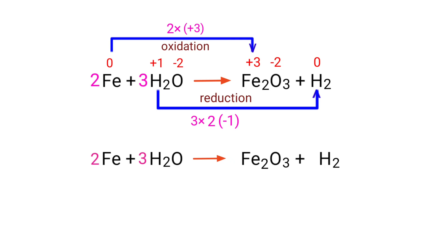Now you can balance the number of atoms in this equation. In the reactants side, there are 2 iron atoms, 6 hydrogen atoms, and 3 oxygen atoms present. And the products side, there are 2 iron atoms, 2 hydrogen atoms, and 3 oxygen atoms present. The number of atoms are not balanced on both sides.